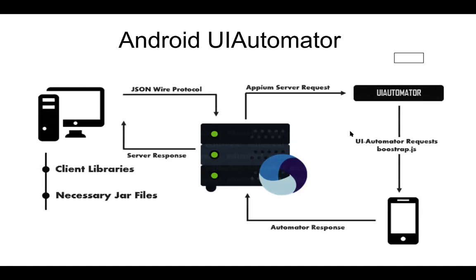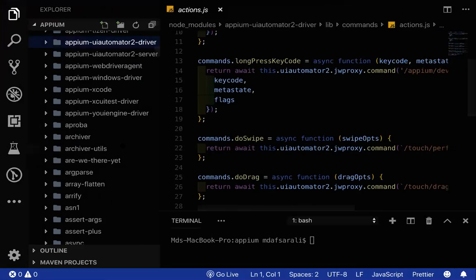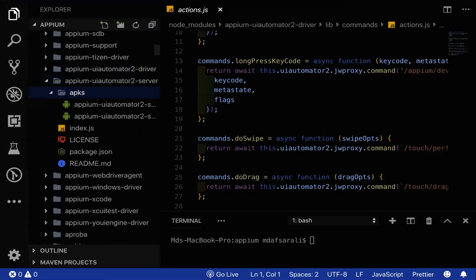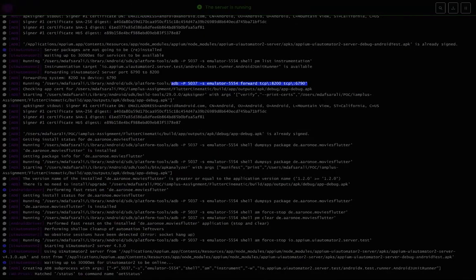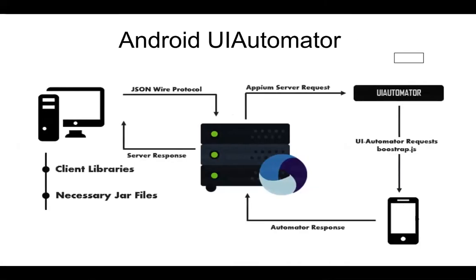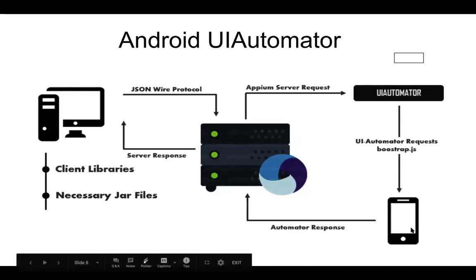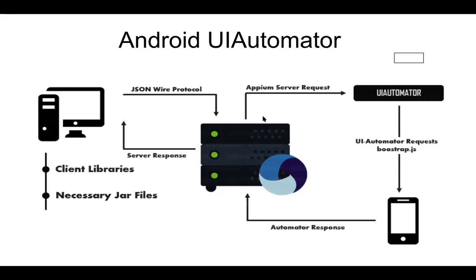The full flow for Android UI Automator 2: the JSON Wire Protocol goes to the Appium server, the request goes to UI Automator 2, using the two APK files which are installed on the device. Port forwarding is done via ADB — with the 'adb -p 5037 -s emulator-name forward tcp:8200 tcp:6790' command. After that, the application under test communicates with the UI Automator 2 server, which communicates with the Android driver, then the base driver, then the JSON Wire Protocol, then the HTTP server, and finally back to your language binding or REST API.